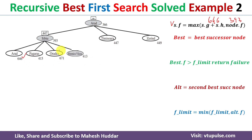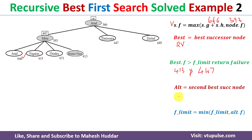After calculating f values for all four successors of Sibiu, the best is Rimnicu Vilcea with f = 413. The current f_limit is 447. Since 413 is not greater than 447, we do not return failure. The alternate successor is Fagaras with f = 415. The new f_limit = min(447, 415) = 415.